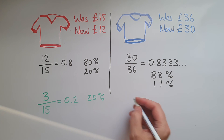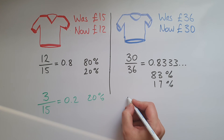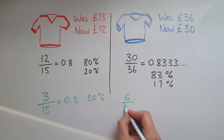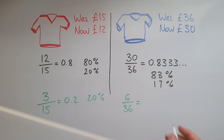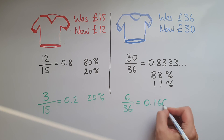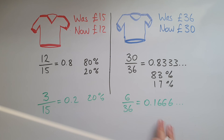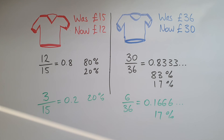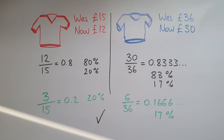And for the blue shirt, six pounds is the difference, so six out of 36, which gives us 0.1666 with the six recurring. When we round it up, that gives us about 17%. So we have a greater discount with the red shirt.